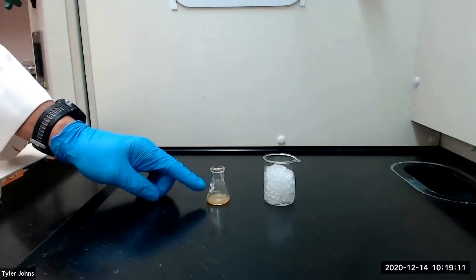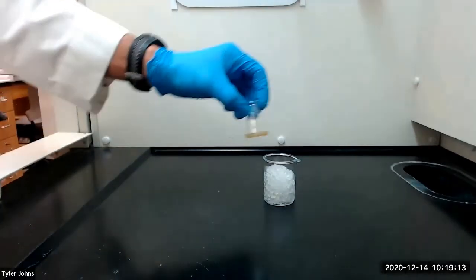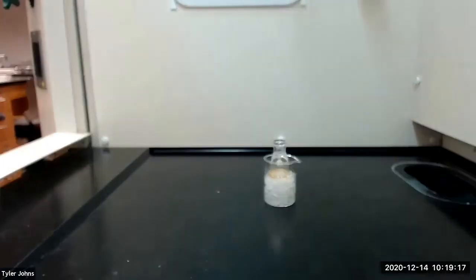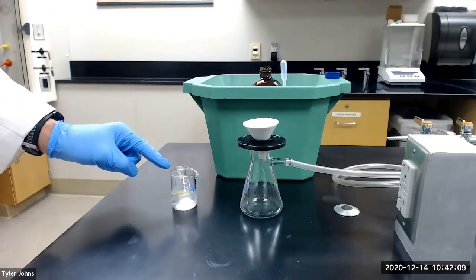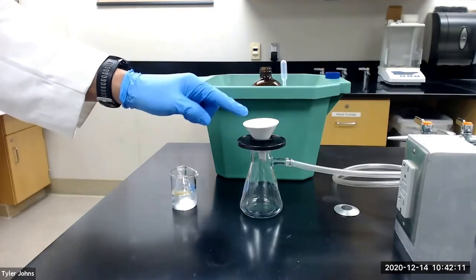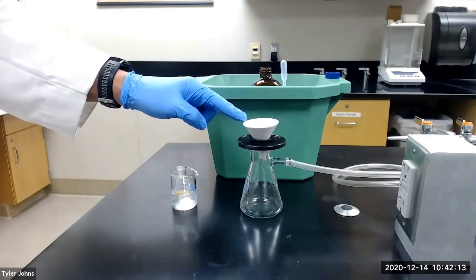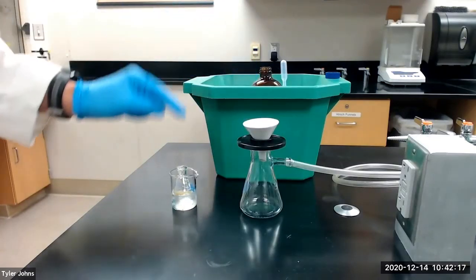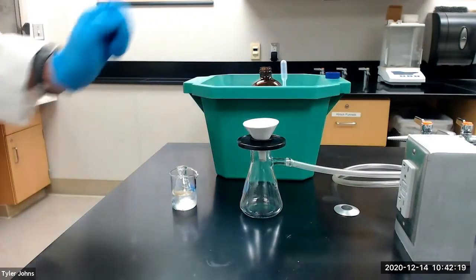After cooling to room temperature, we will place the Erlenmeyer flask in an ice bath until crystallization is complete. After crystallization is complete, we will use vacuum filtration with a Hirsch funnel to collect the crystals, and we will use ice cold 95% ethanol to aid in the collection and washing of the crystals.